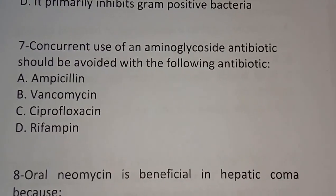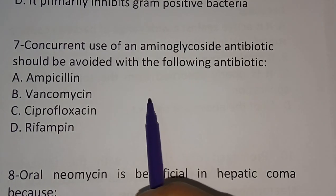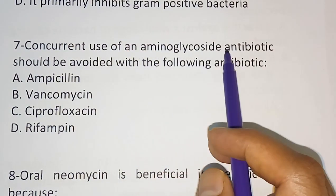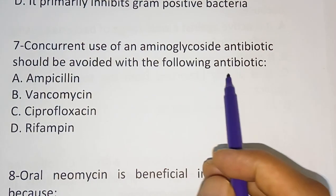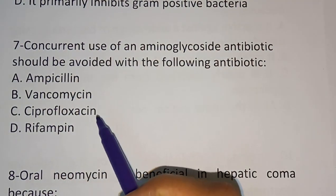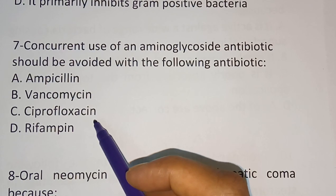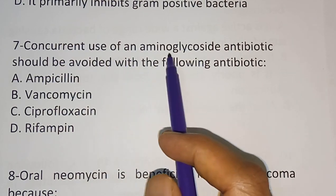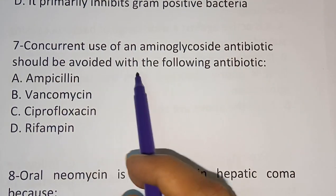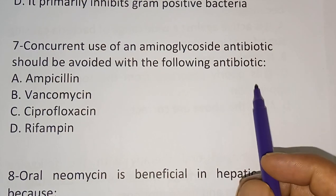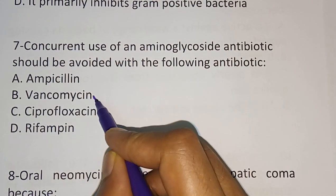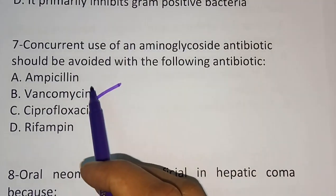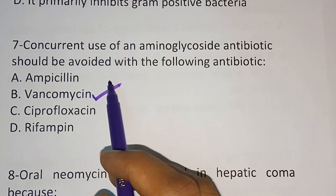Question 7: Concurrent use of Aminoglycoside antibiotics should be avoided with which of the following antibiotics? Option A: Ampicillin. Option B: Vancomycin. Option C: Ciprofloxacin. Option D: Rifampicin. The correct answer is Option B, Vancomycin — Vancomycin and Aminoglycoside antibiotics should not be used concurrently.